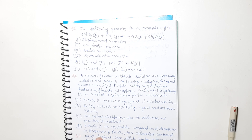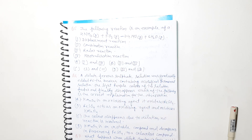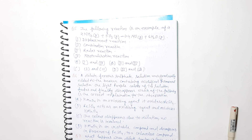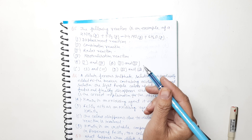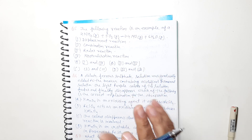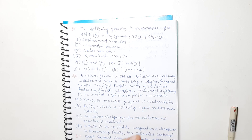The following reaction is an example of which type: displacement reaction, combination reaction, redox reaction, or neutralization reaction? The given equation is: 4HNO3 + 5O2 → 4NO + 6H2O. A displacement reaction is when a more reactive metal displaces a less reactive metal from its salt solution. There are 5-6 types of reactions.